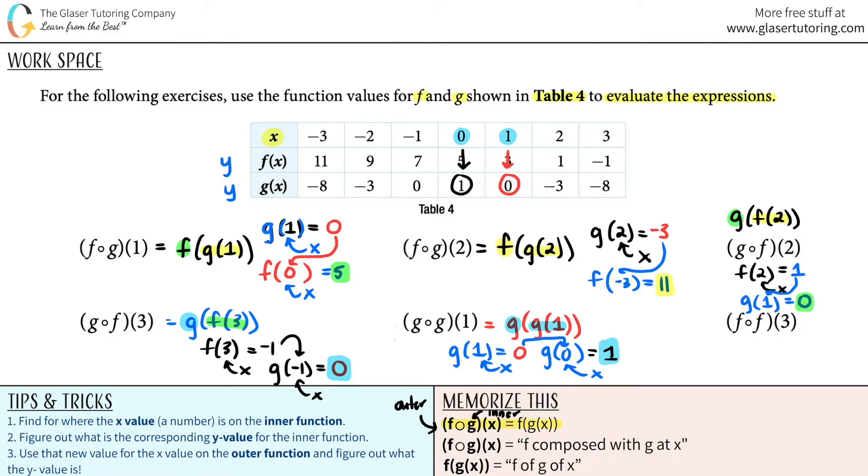Last one. F composed with f at 3. I'm going to switch it. It's f of f of 3. Inner function now is clearly f of 3. This is your x value. Let me just erase this. So your x value is a 3. Drop down to the f. Negative 1. Outer function is again an f. But use the answer that you got. This would be f of negative 1.